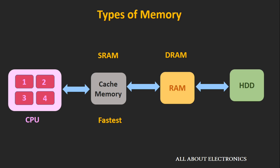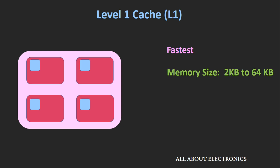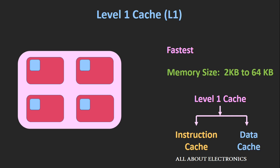Now let's see the different levels of cache memory. The first level is known as Level 1 cache or L1 cache. A tiny amount of memory is integrated inside the CPU itself, and all cores have their individual L1 cache. Because it is integrated inside the CPU, it can operate at the same speed as the CPU — making L1 cache the fastest among all caches. The typical size is 2KB up to 64KB. Inside L1 cache there are two kinds: instruction cache, which stores instructions required by the CPU, and data cache, which stores the data required by the CPU.